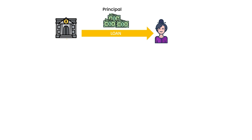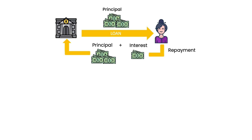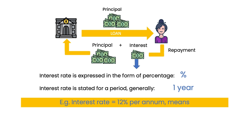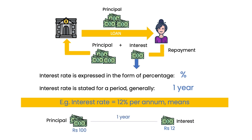The principal is to be repaid by the borrower within a certain period. However, for providing the financial service, the bank charges a fee called the interest. Interest rate is expressed in the form of a percentage and for a period which is generally one year. For example, a bank can say that its interest rate is 12% per annum. This means that the bank will charge Rs 12 for every Rs 100 lent for a period of one year. Stating the interest rate this way helps one to calculate the actual interest amount for any loan amount and for any period.